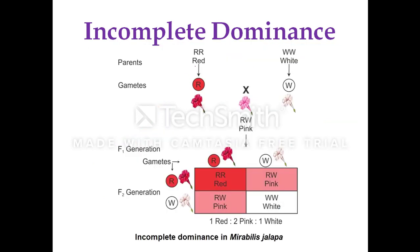Mirabilis jalapa, also called the four o'clock plant or sanjamalige, typically blooms between four and six o'clock and has very colorful, attractive flowers. In this cross, the red flower bearing parent is controlled by capital R and is the homozygous dominant parent (RR), crossed with the white flower bearing parent.